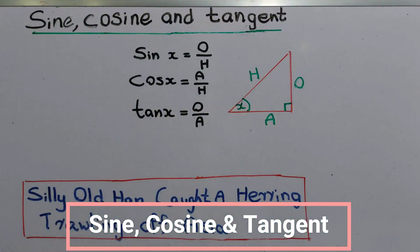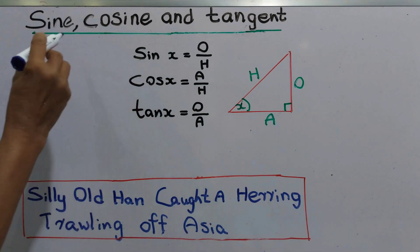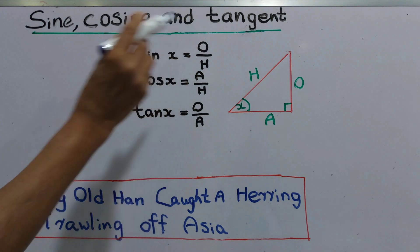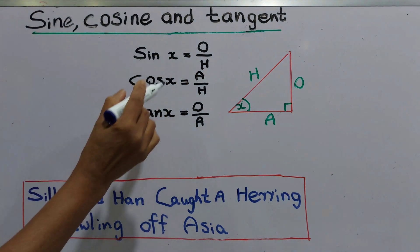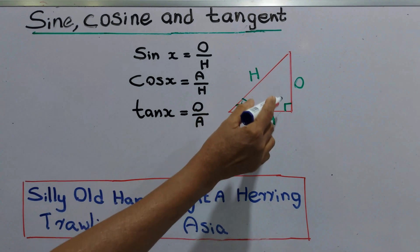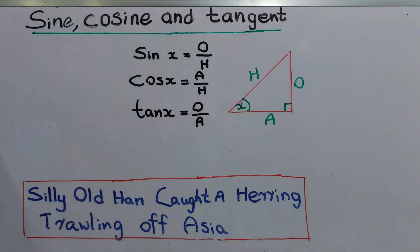Today we are going to study very important functions. These are the three functions we are going to study: sine, cosine, and tangent. We are going to apply this to this triangle. This is a right angle triangle.